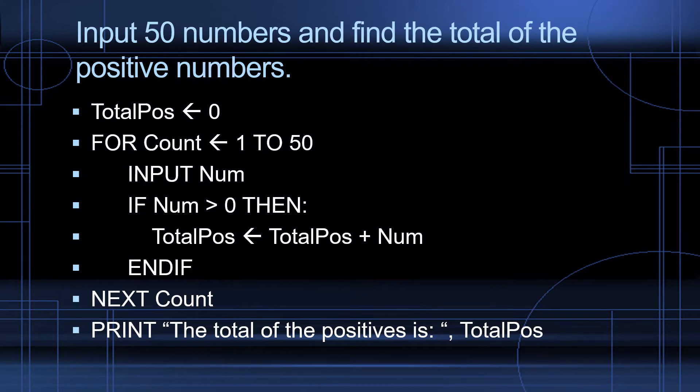And if next count, these lines are going to repeat 50 times. So I'm going to input 50 numbers. I'm going to check if that number that I input is greater than zero. If it is, I'll add it to my running total. Once I've input 50 numbers, checked if they're positive, and if they were positive, added them to the total, I'm ready to print the total of the positives is total pos.